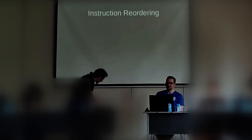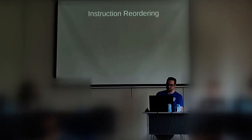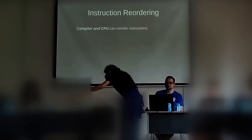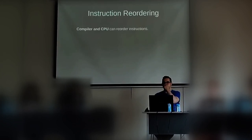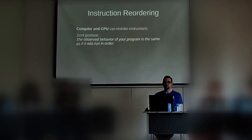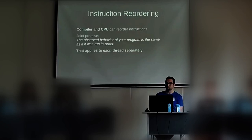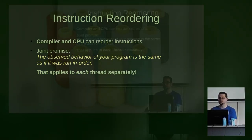But here is when tricky things start to happen. The first thing you have to understand is that both the compiler and the CPU — the CPU at runtime, the compiler at compile time — are allowed to reorder the instructions in your program. So things don't work like you assumed anymore. They at least promise that the observed behavior of your program will be the same as if they weren't reordering instructions — but that is per thread. So if your program has more than one thread, the observed behavior actually changes. That's the issue.